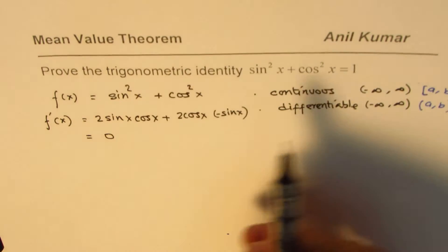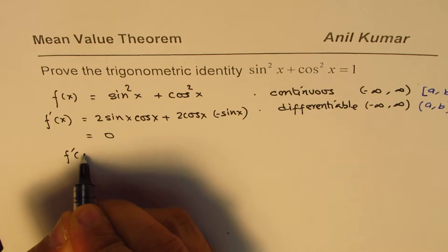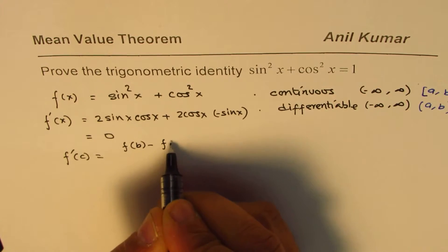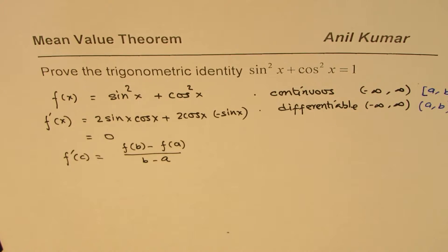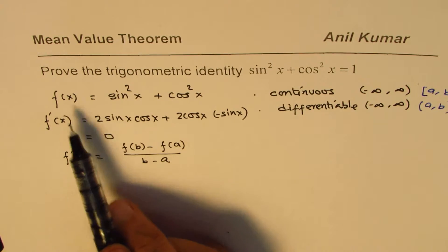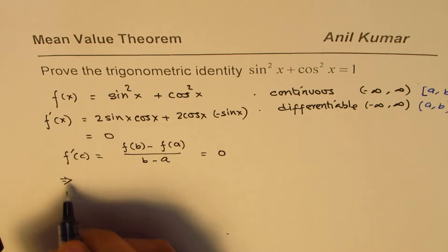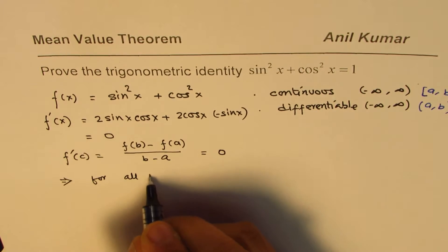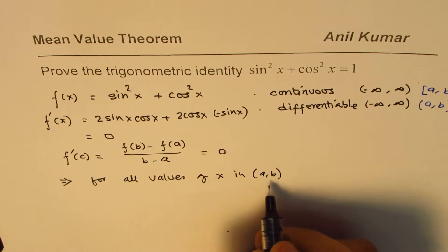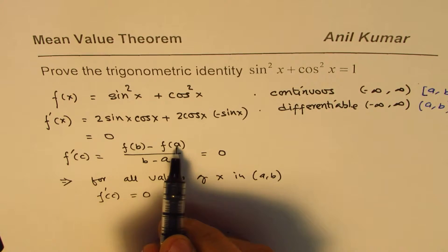We know from the mean value theorem that if these two conditions are satisfied, there exists a point c such that the derivative at that point equals f(b) minus f(a) divided by b minus a. But what we found for this function is that it is always equal to 0. So for all values of x in the open interval a to b, f'(c) equals 0, which means f(b) equals f(a).